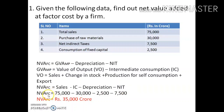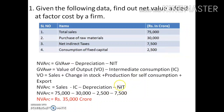Substituting the values: NVAFC = sales of ₹75,000 minus intermediate consumption (purchase of raw materials) of ₹30,000, minus depreciation (consumption of fixed capital) of ₹2,500, minus net indirect tax of ₹7,500. So we get NVAFC = ₹35,000 crore.